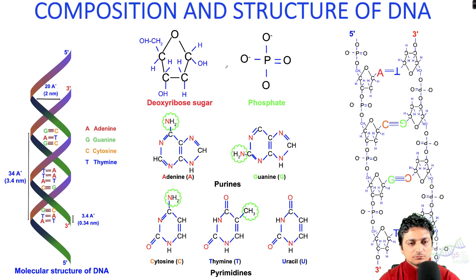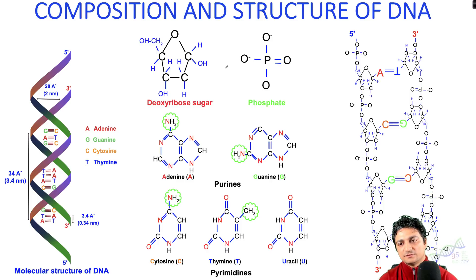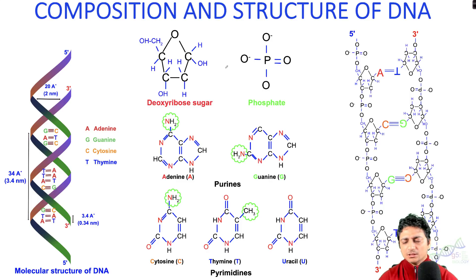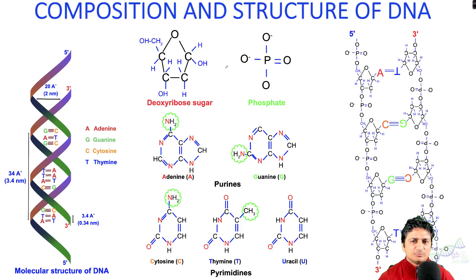Hello everyone, welcome back to my channel. This is Saroj Parajuli. Today I will be talking about the composition and the structure of DNA, commonly known as deoxyribonucleic acid. The modern double helix DNA structure was discovered by Watson and Crick. Today I will be talking about the composition and two different structures of DNA.